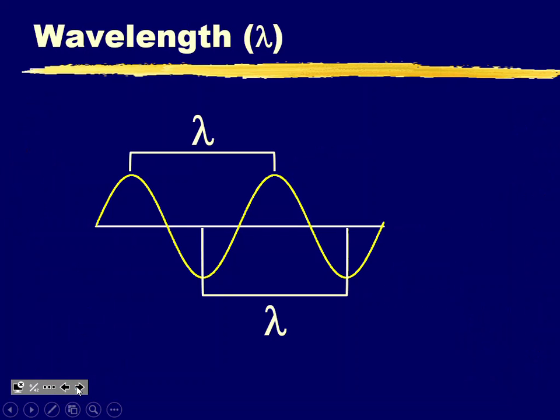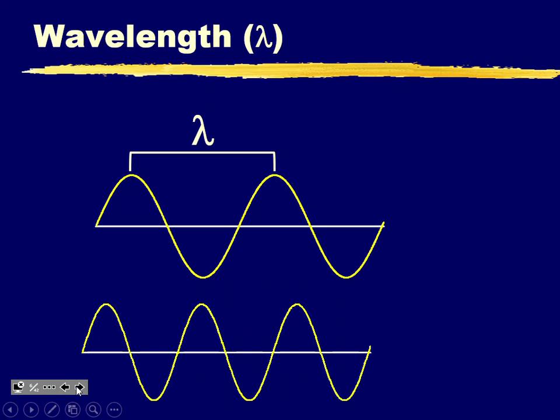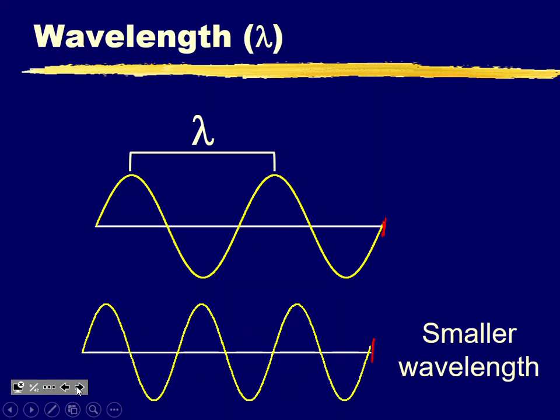Wavelength is noted by the symbol lambda, a lowercase Greek letter used consistently across physics and science classes. In the diagram, a wave with more oscillations in the same time period has a higher frequency than the top wave. Smaller wavelength means higher frequency.